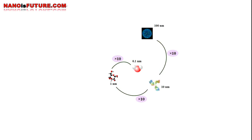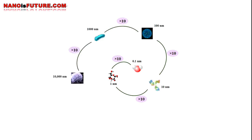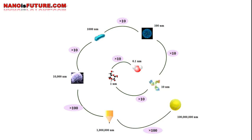A virus with 100 nanometers diameter is 10 times that of an antibody. A bacterium with 1,000 nanometers diameter is 10 times that of a virus. A cancer cell with 10,000 nanometers diameter is 10 times that of a bacterium. A pencil tip with 1,000,000 nanometers diameter is 100 times that of a pencil tip. And a tennis ball with 100,000,000 nanometers diameter is 100 times that of a pencil tip.